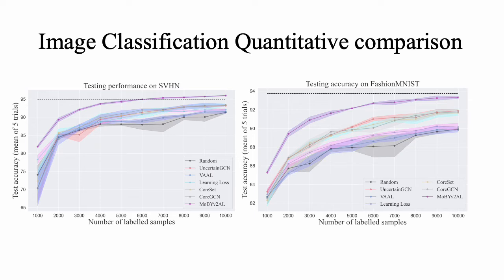Moving on, we experiment on SVHN and FashionMNIST. Here the datasets have high redundancy. Both the visual concepts of the unlabeled data are learned with MobiV2 self-supervision, and our method maintains a clear advantage against the other active learning baselines. FashionMNIST also proves that the method can be successfully applied to grayscale images. The learner used in both experiments is ResNet-18, and the settings and results are gathered from the Core-GCN work, which was also one of the state-of-the-art baselines.